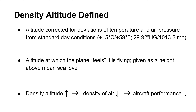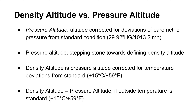The term comes from the fact that air density decreases with altitude. Thus, a high density altitude means that the density of air is reduced and it will negatively affect aircraft performance. The related term is pressure altitude, which is the altitude when you control for the deviation of atmospheric pressure from the standard day. Pressure altitude is like a stepping stone towards defining density altitude, because density altitude controls for both temperature and air pressure, while pressure altitude controls only for air pressure.